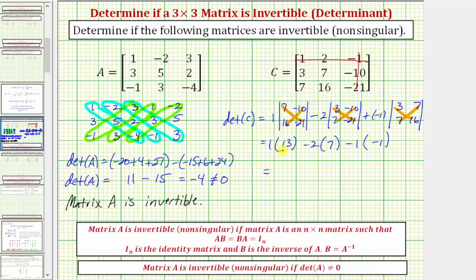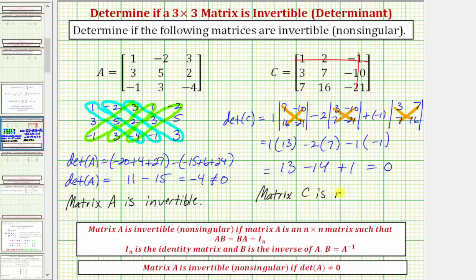Simplifying one last time, we have 13 minus 14 plus 1, which equals zero. So the determinant of matrix C is equal to zero, which means matrix C is not invertible, meaning matrix C does not have an inverse. We say matrix C is not invertible, or that matrix C is singular, since if a matrix is invertible we say it's non-singular.